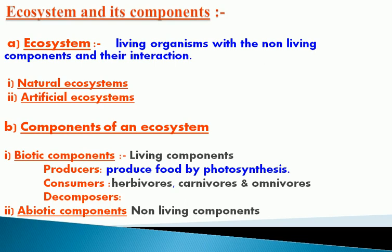Producers are autotrophs — green plants that synthesize food by photosynthesis. They are called producers. Consumers directly depend on producers for energy. Consumers are classified as herbivores, carnivores, and omnivores. Herbivores feed on plants, carnivores feed on meat, and omnivores feed on both plants and meat. These are called consumers.